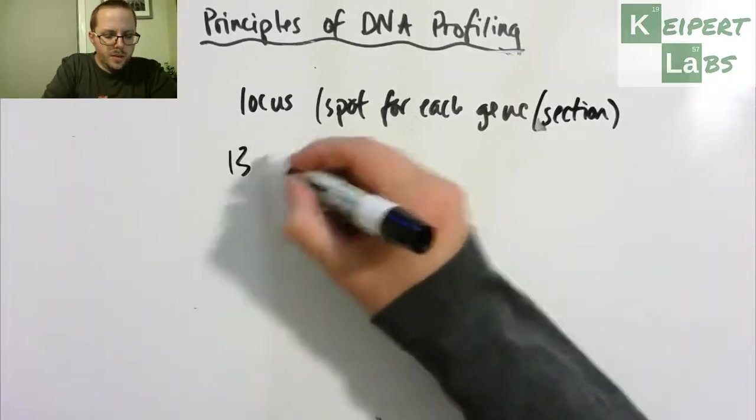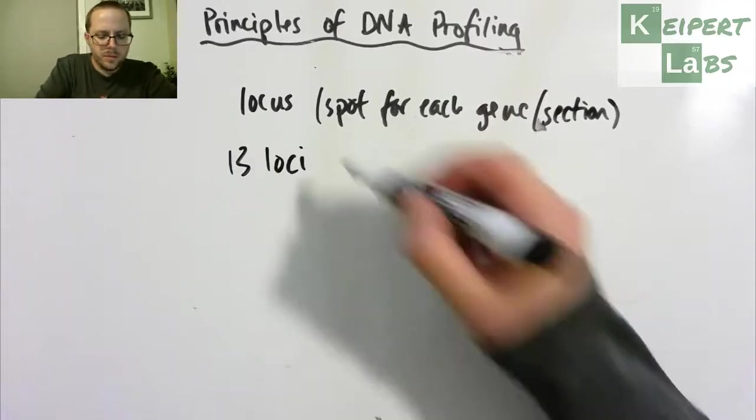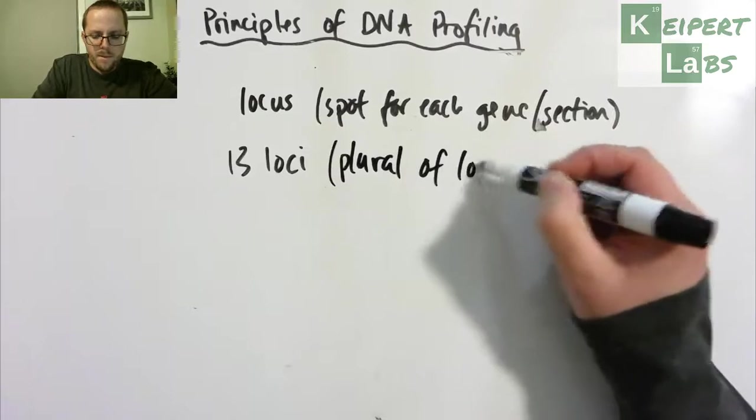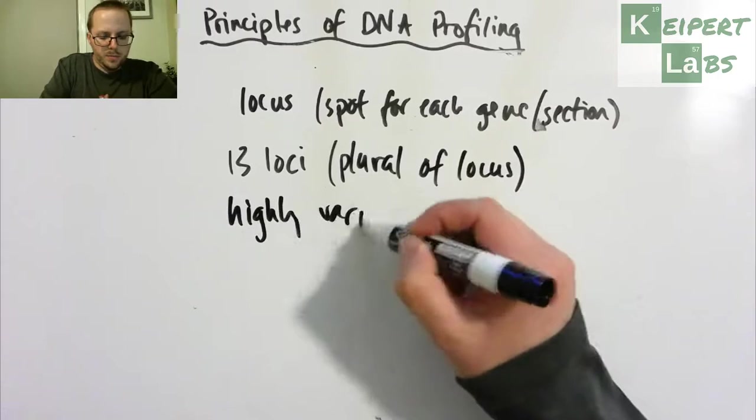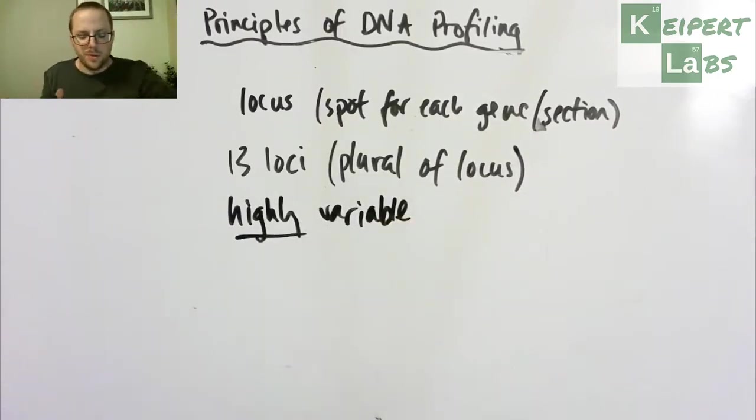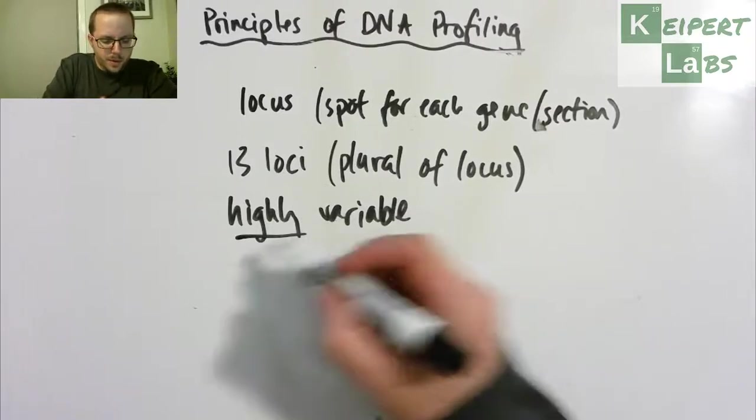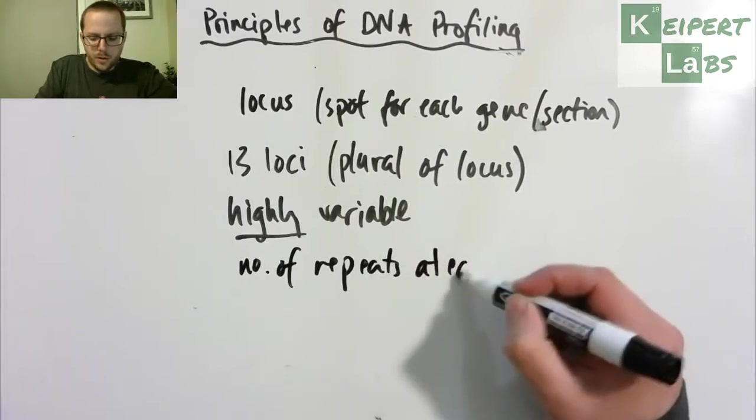And so we have 13 particular spots, loci which is the plural of locus, that these 13 spots are highly variable that we've identified, and they're across all sorts of different chromosomes inside your cells. So there's 13 highly variable spots, and so the number of repeats at each locus...